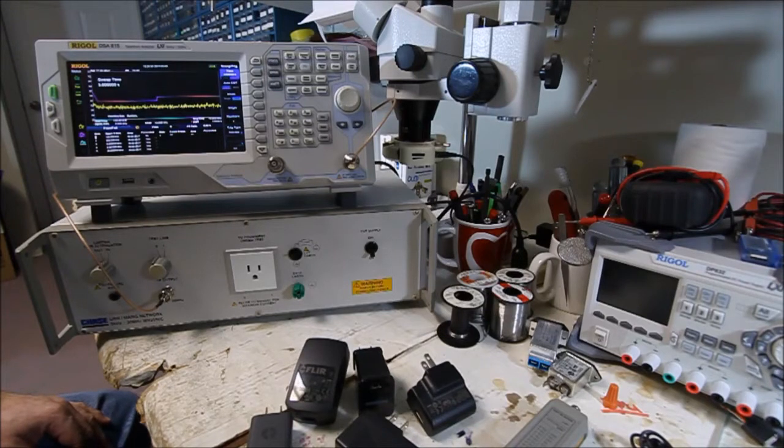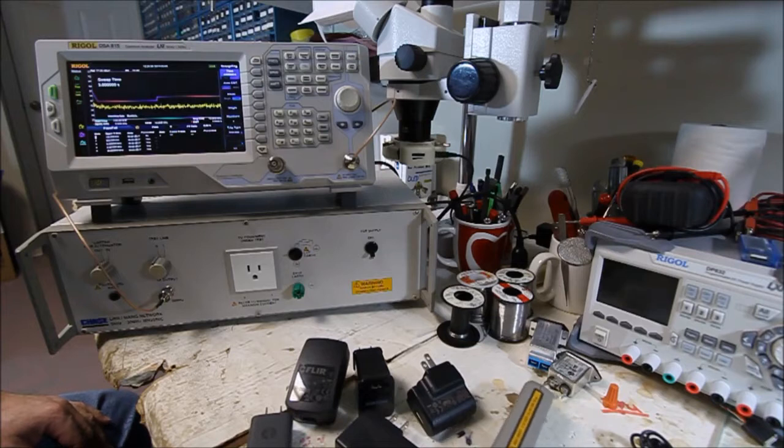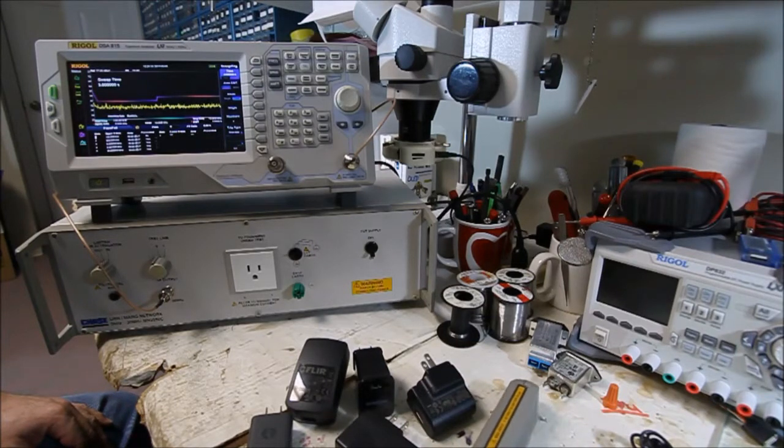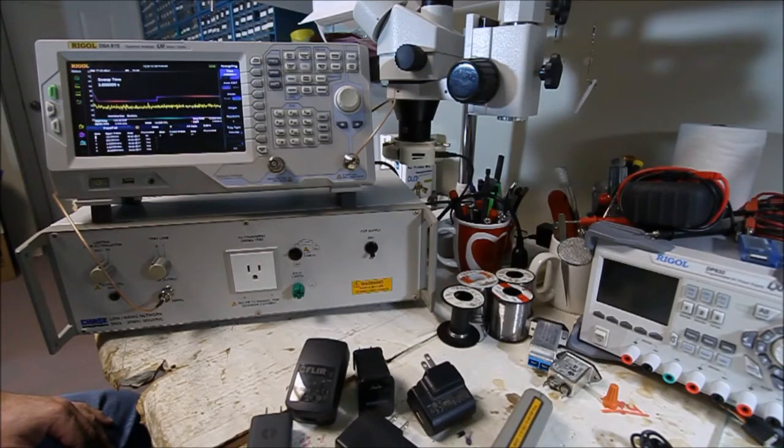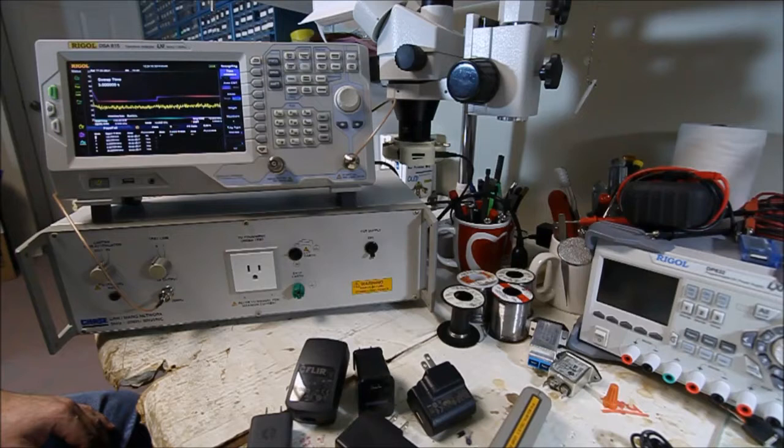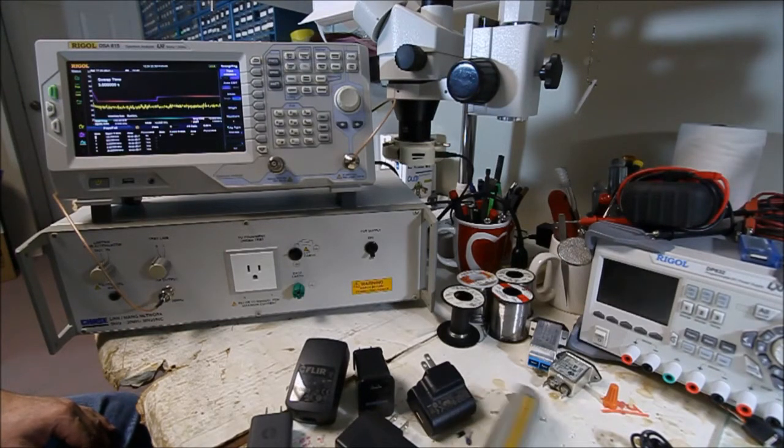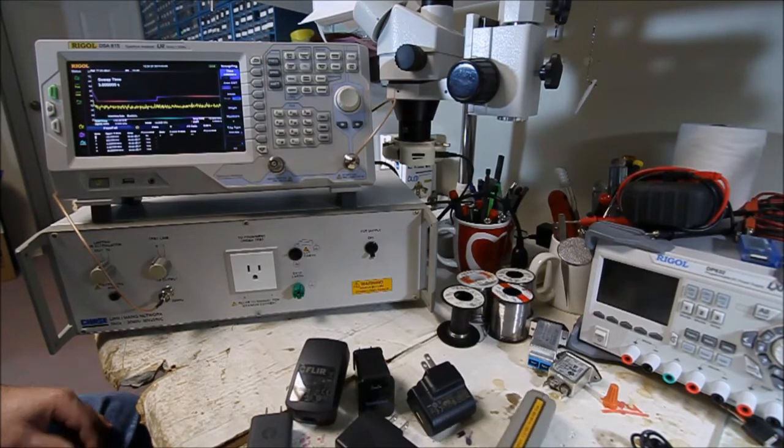For my testing, I'm using a Rigol DSA 1815-TG-EMI. It's the standard low-cost Rigol spectrum analyzer with the built-in tracking generator and some of the EMI options. I'm also connected to a line impedance stabilization network called a LISN.